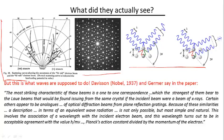And so they actually say in their paper, here's a quote from the paper: 'The most striking characteristic of these beams is a one-to-one correspondence which the strongest of them bear to the beams that would be found issuing from the same crystal if the incident beam were beam of x-rays.' So they're saying if they were to scatter x-rays off the same crystals, they would show the same picture.